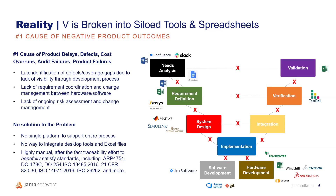JAMA Software can certainly resolve some of these components through its inherent capability of tying risk and test information with requirements. But many companies have come to accept this situation as unchangeable — if there's no single platform, they manage things in silos and accept desktop tools and spreadsheets as part of the process. The key to achieving live traceability is to sync these existing best-of-breed tools, even desktop tools and spreadsheets, with requirements. JAMA Software is truly making this possible.